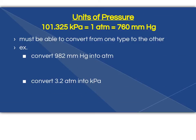Three units of pressure that we'll be using regularly are kilopascals, which are kPa, atmospheres, which are atm, and millimeters of mercury, which are millimeters of Hg. What you have to be able to do is convert from one pressure to another. So I've given you two examples here.